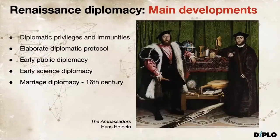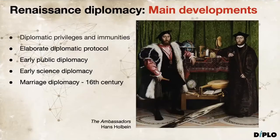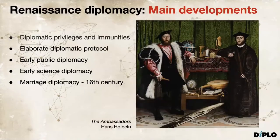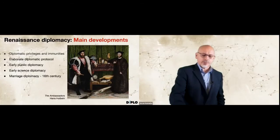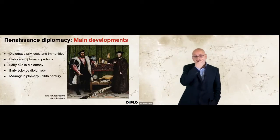What were the main developments? First, Renaissance diplomats enjoyed diplomatic privileges and immunities. The person, premises, and communication of diplomats were protected by diplomatic immunities, similar to those of nowadays. Renaissance diplomacy also inherited aspects of elaborate Byzantine ceremonies. Every detail of diplomatic protocol was negotiated — as illustrated by Harold Nicholson: at what exact stage in the proceedings should the ambassador remove or replace his hat? There was high focus on the importance of protocol signaling and overall etiquette.